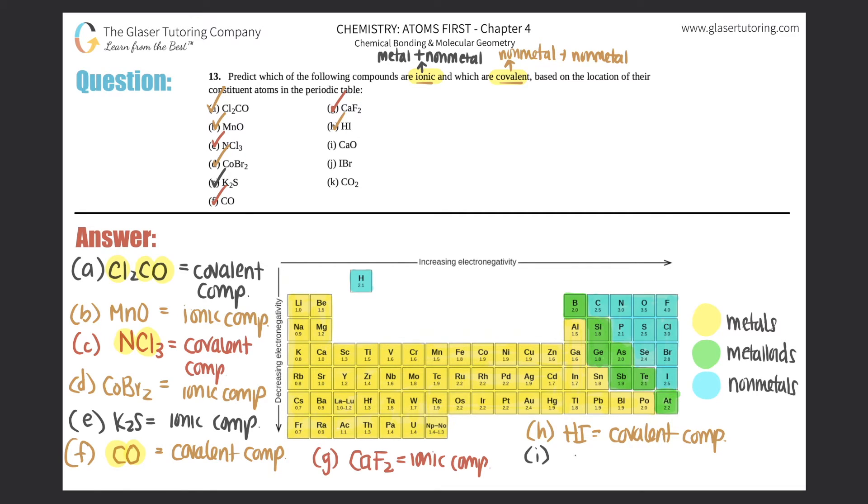I, calcium oxide. Calcium is a metal, it's over here. And oxygen is also a metal. Oh, sorry. Oxygen is a non-metal. So calcium and oxygen, metal and non-metal, this would be ionic.